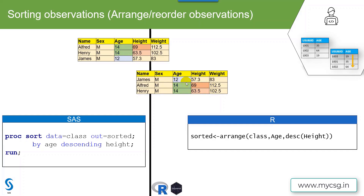After 12, the next series is 14, so those two records should appear next. Within age 14, the record with the highest height value should appear first. Of the two records, one has a height value of 69 and the other has 63.5. Since 69 is greater, that record should appear first, then 63.5. This is the expected output.